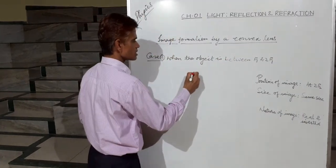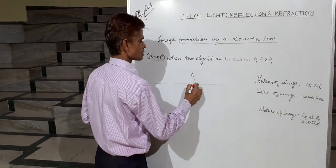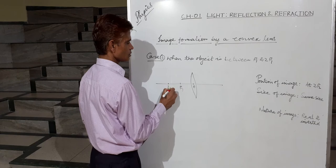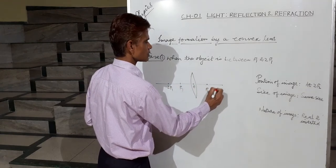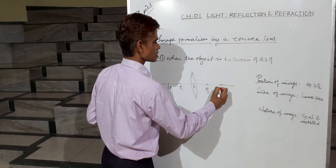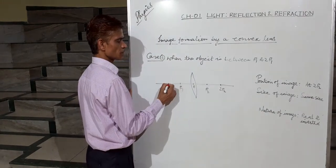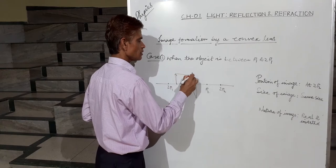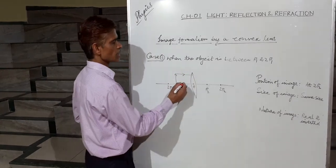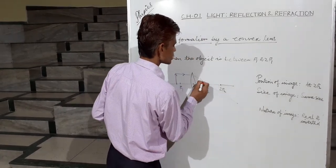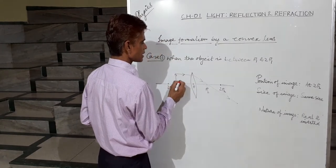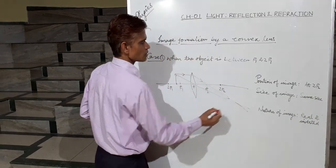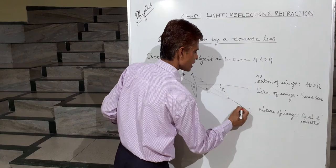We will see where the image is formed. This is the optical center, F1, 2F1, F2, and 2F2. The object is anywhere between F1 and 2F1. Take one ray parallel to the principal axis — this ray after refraction passes through F2. Take another ray through the optical center — this ray will not deviate, it goes as it is.